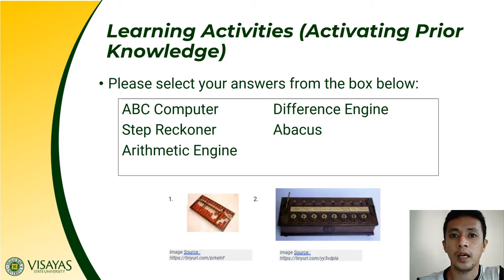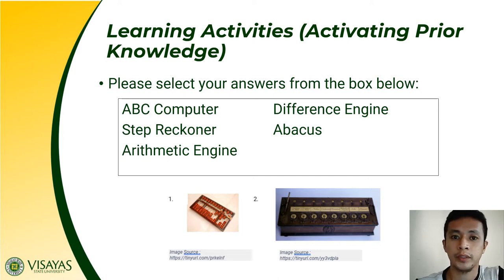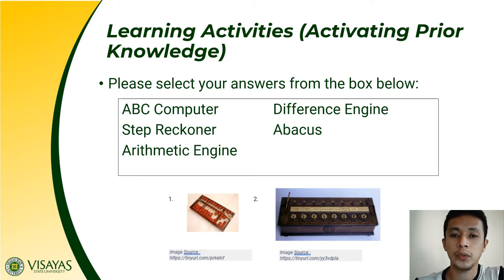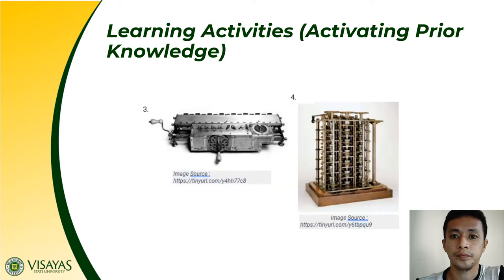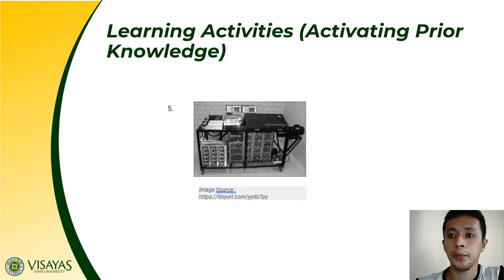I want you to identify these objects, whether they are a basic computer, a step reckoner, arithmetic engine, abacus, or a difference engine. Numbers one and two are presented in the slide. I want you to answer what object each is. We also have number three, number four, and number five.